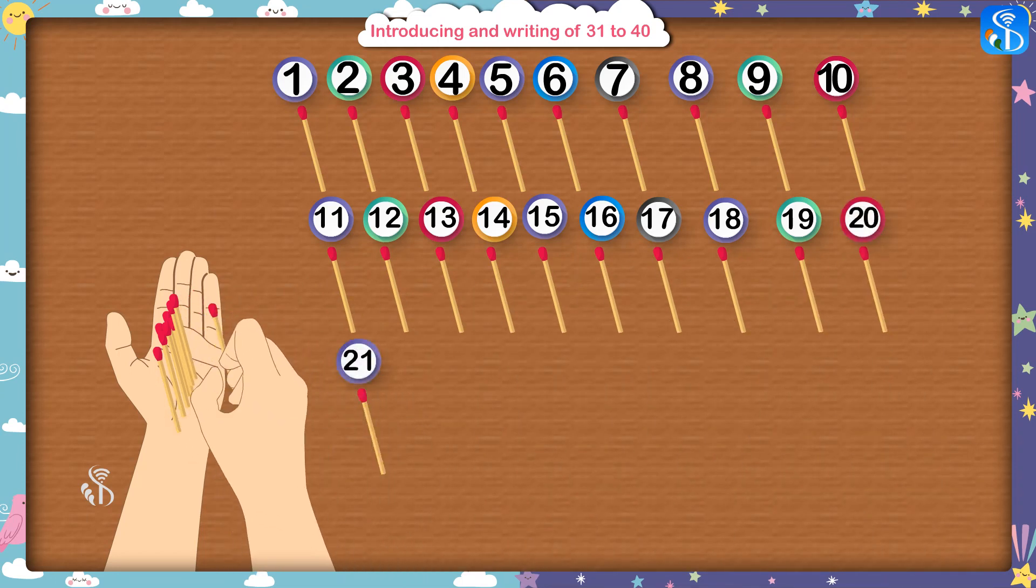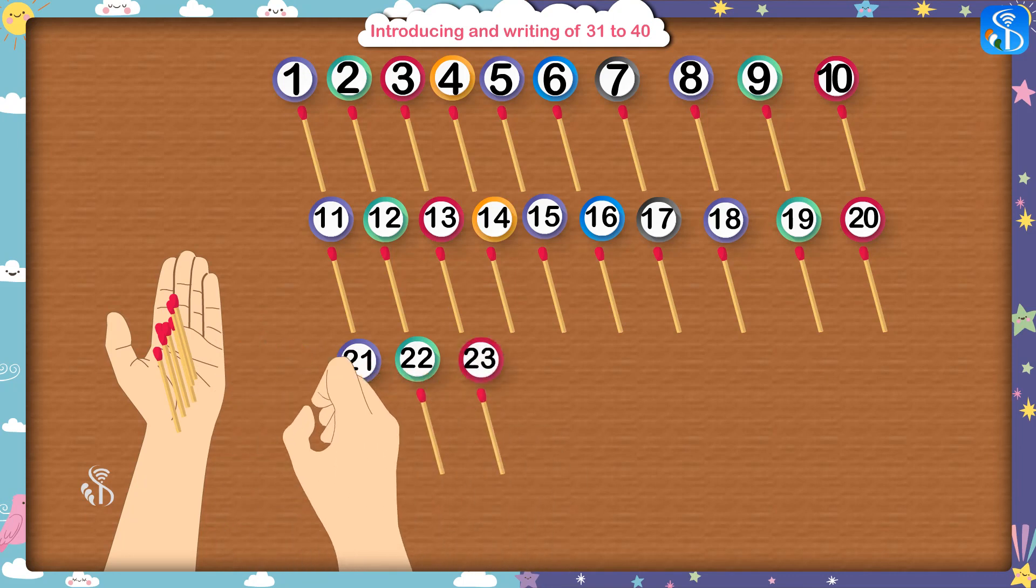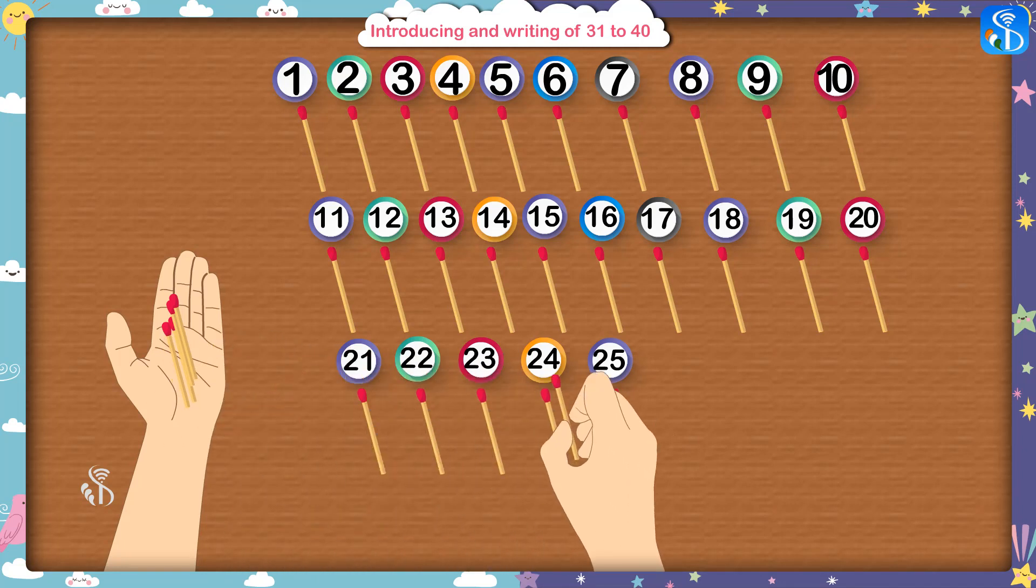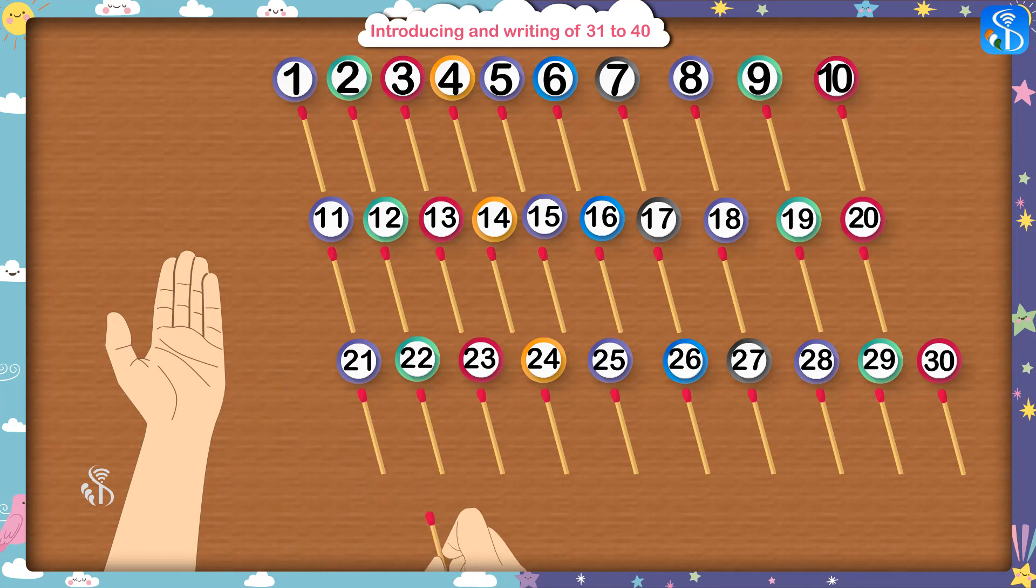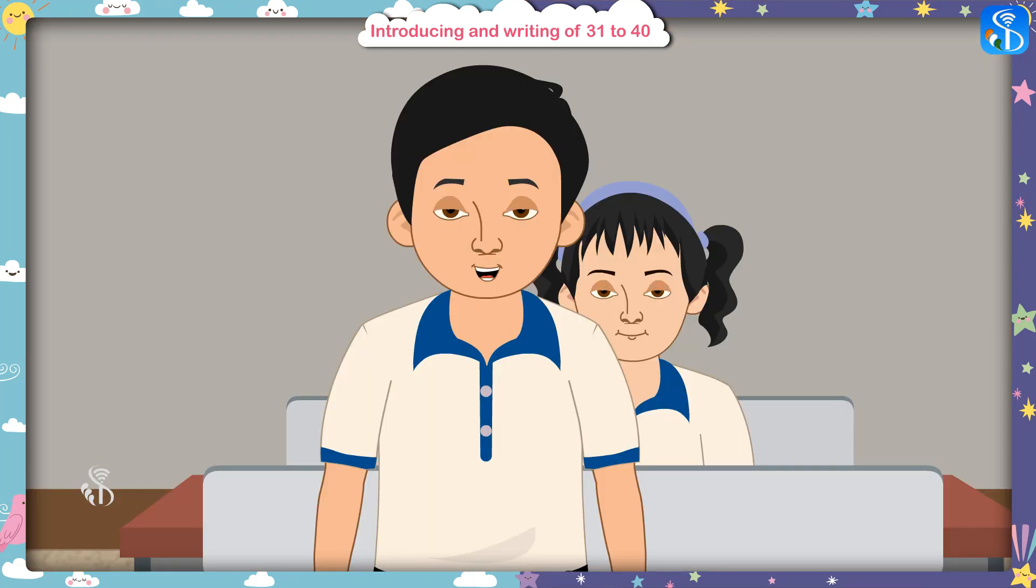Twenty-one, twenty-two, twenty-three, twenty-four, twenty-five, twenty-six, twenty-seven, twenty-eight, twenty-nine, thirty, thirty-one. Sir, these are thirty-one matchsticks.